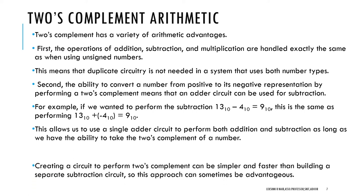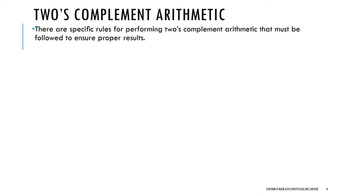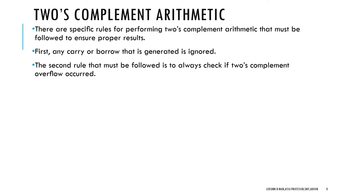This leads to a preservation of circuits and reduction in complexity. There are specific rules for performing 2's Complement arithmetic to obtain proper results. First, any carry or borrow generated out of the most significant bit can be ignored. The second rule that must be followed is to always check if a 2's Complement overflow has occurred.